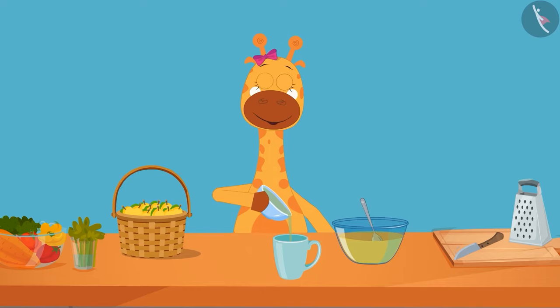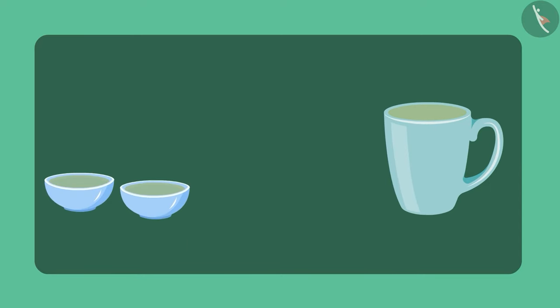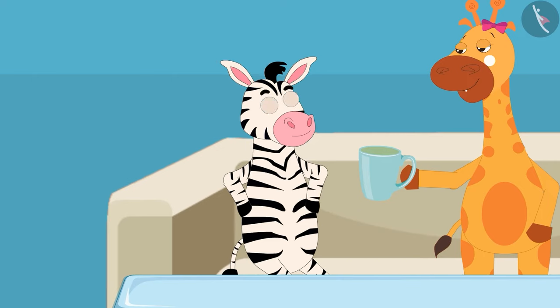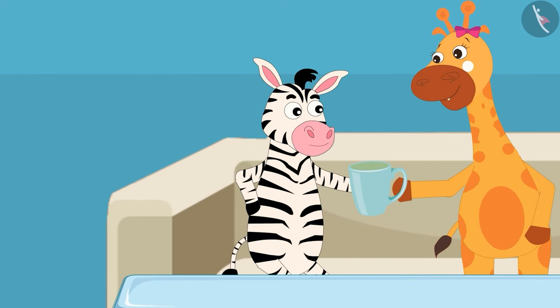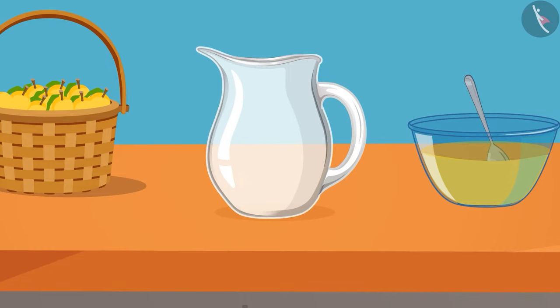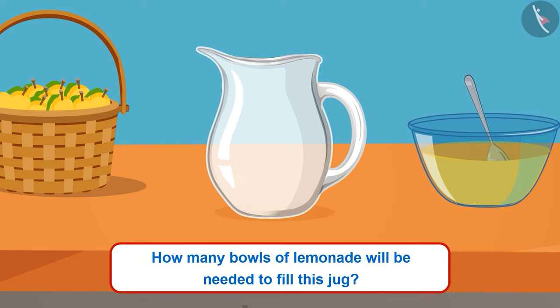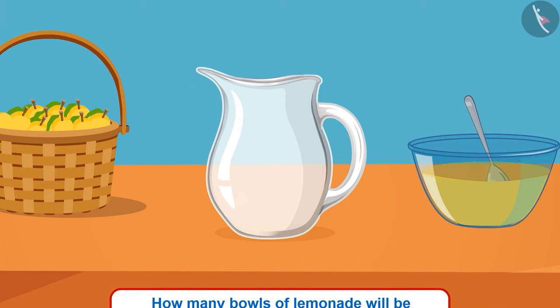Gaffee filled the mug with four such bowls of lemonade and gave it to Joey. Children, there is also a jug. What do you think? How many bowls of lemonade will be needed to fill this jug? Let's find out.